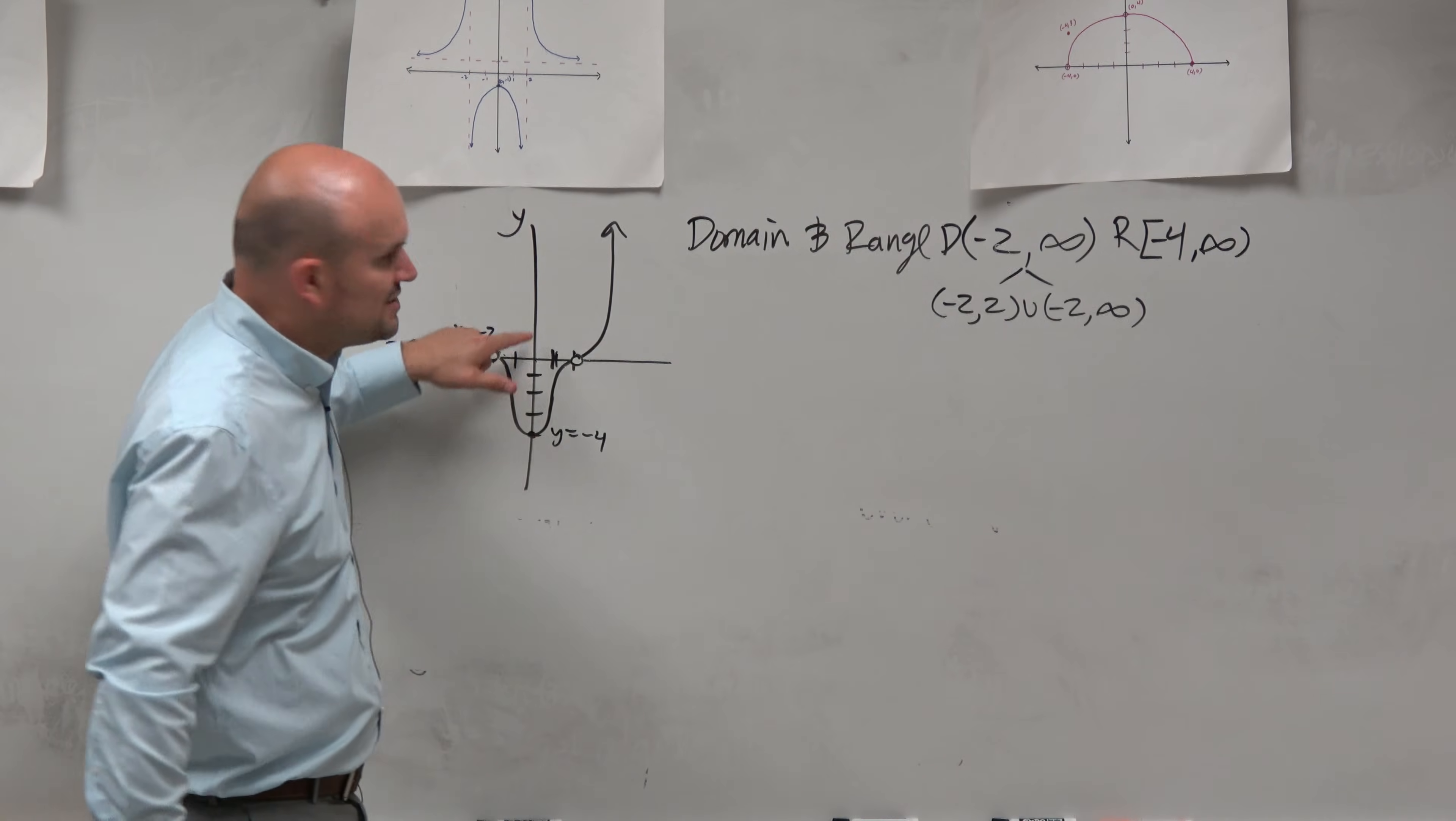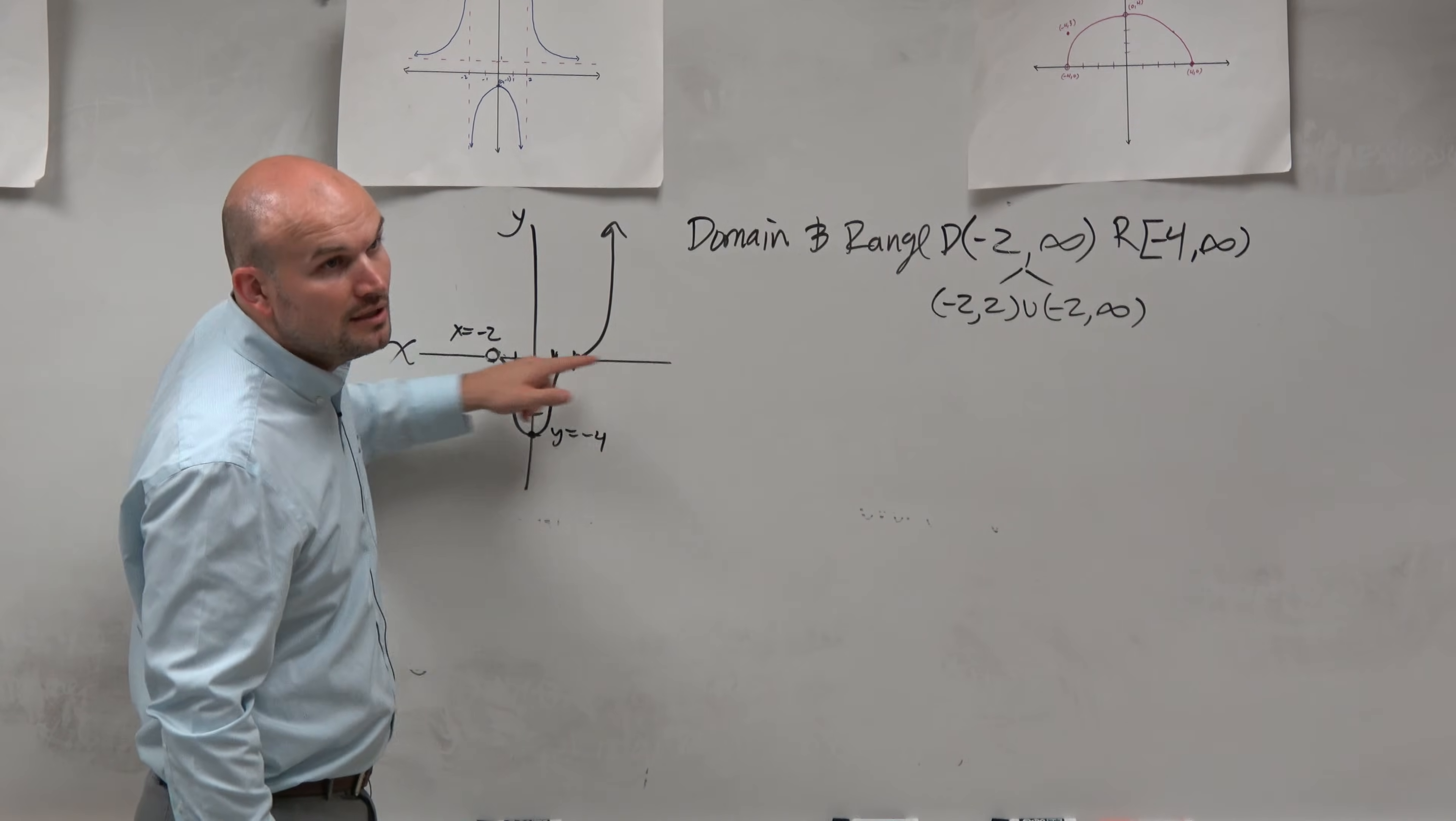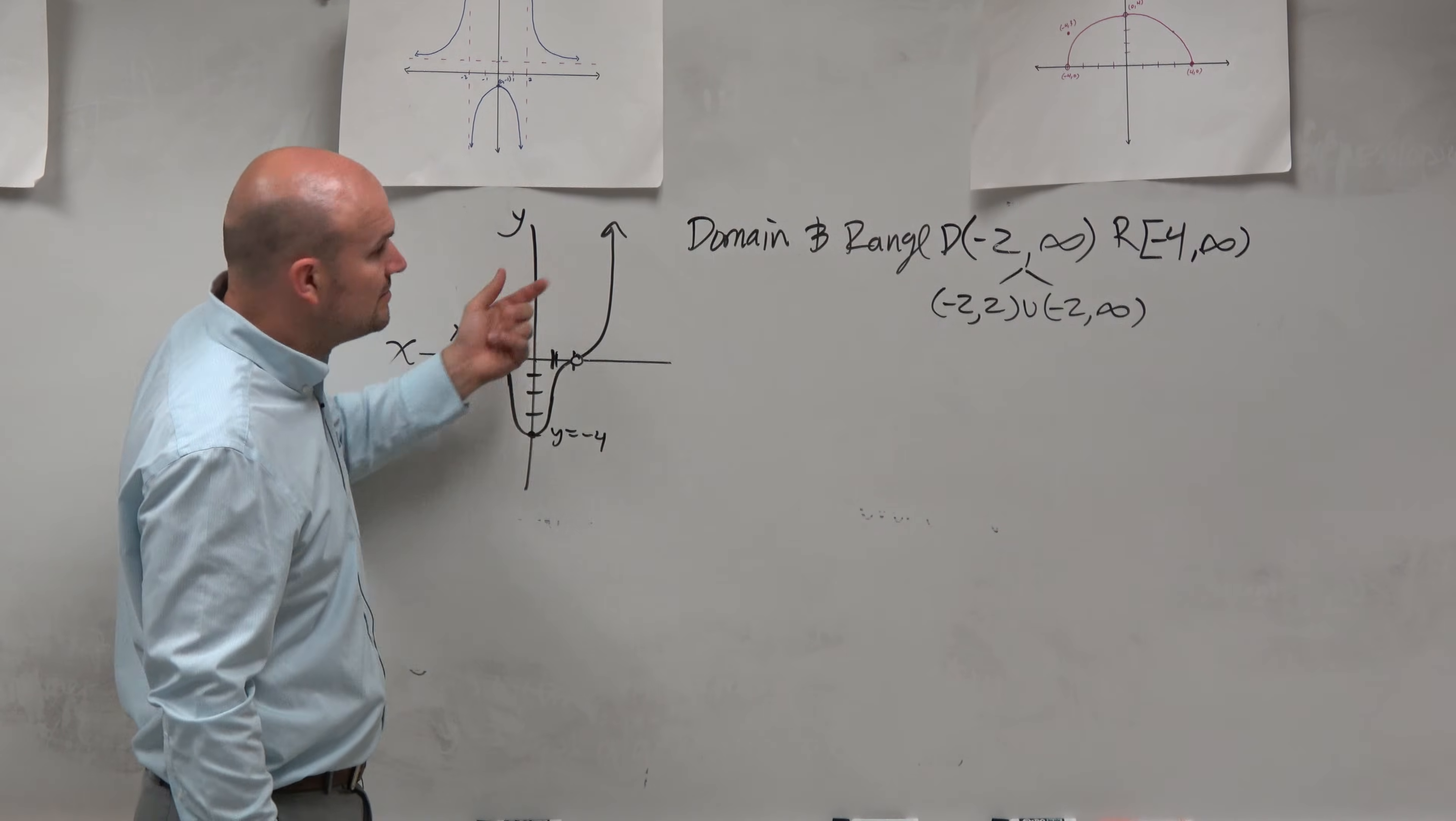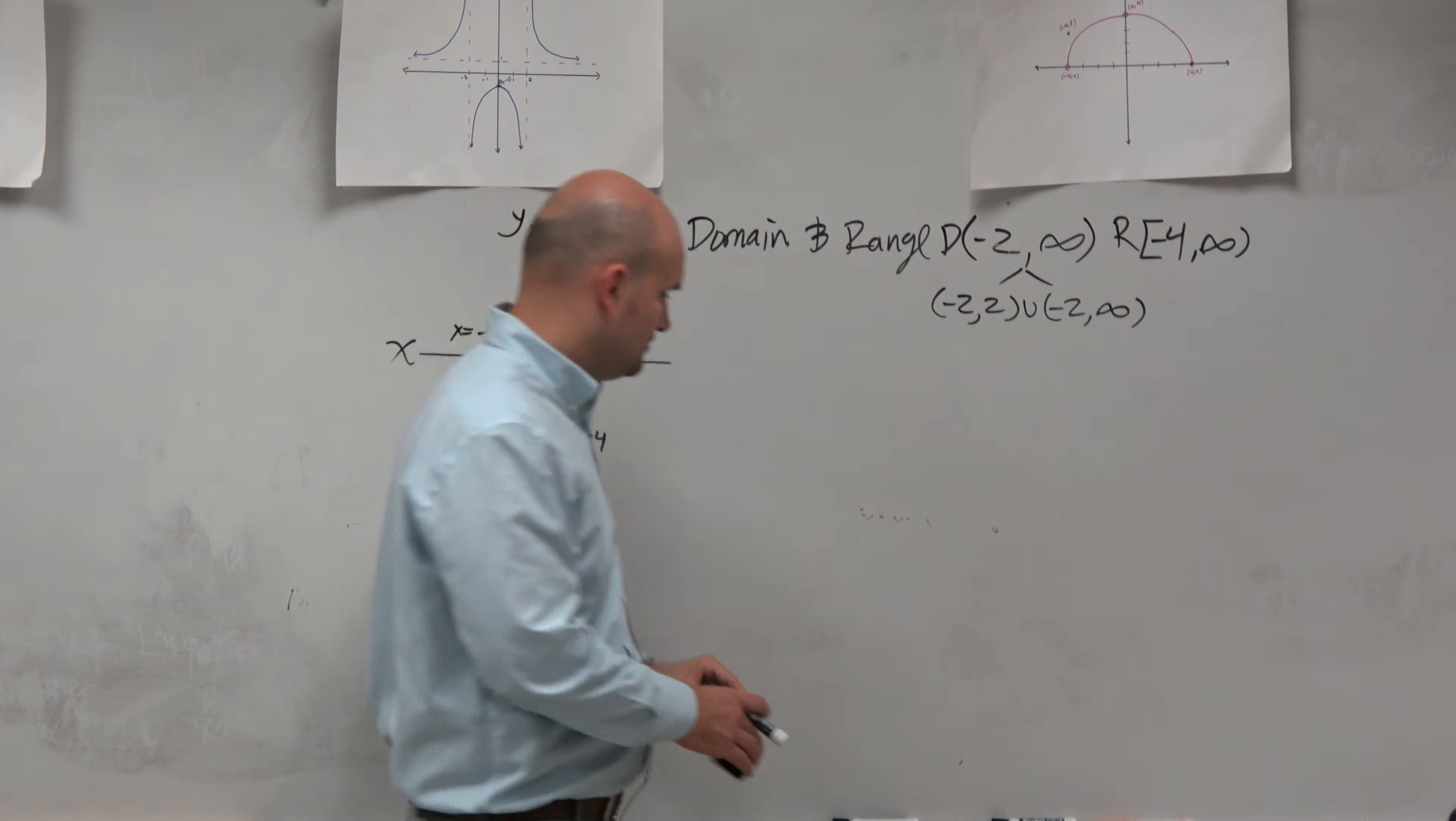And then also, the range would be messed up, too. Because you guys see how the range, now there's no y value. y equals 0. You guys see that? So now there's no y equals 0. So the range would have to be split up, as well. Let's do that real quick.